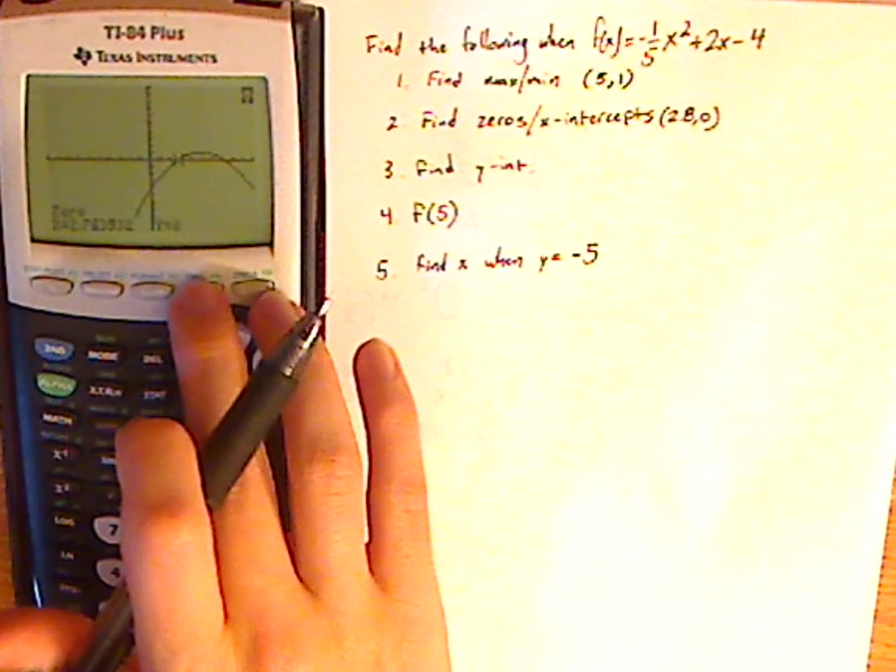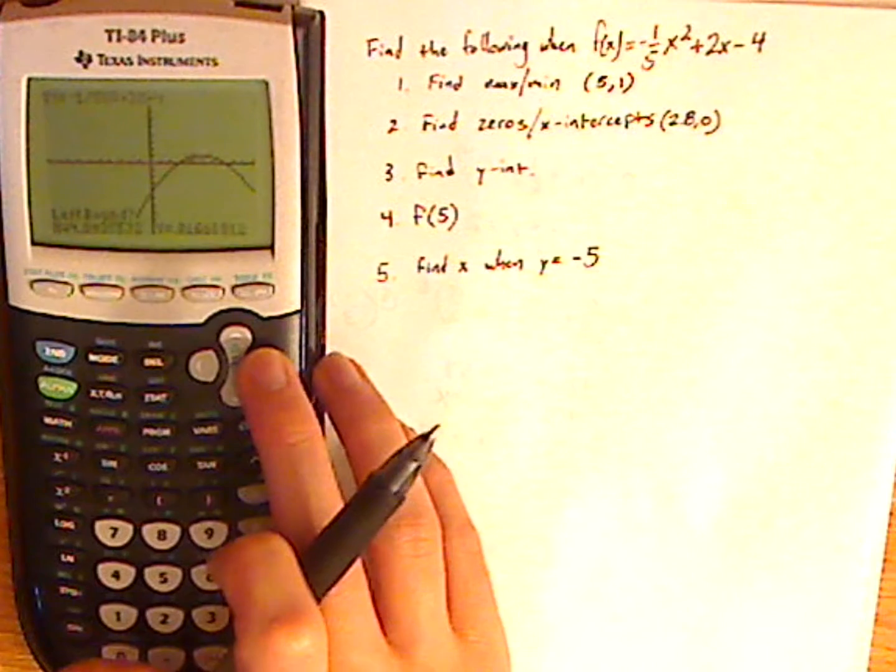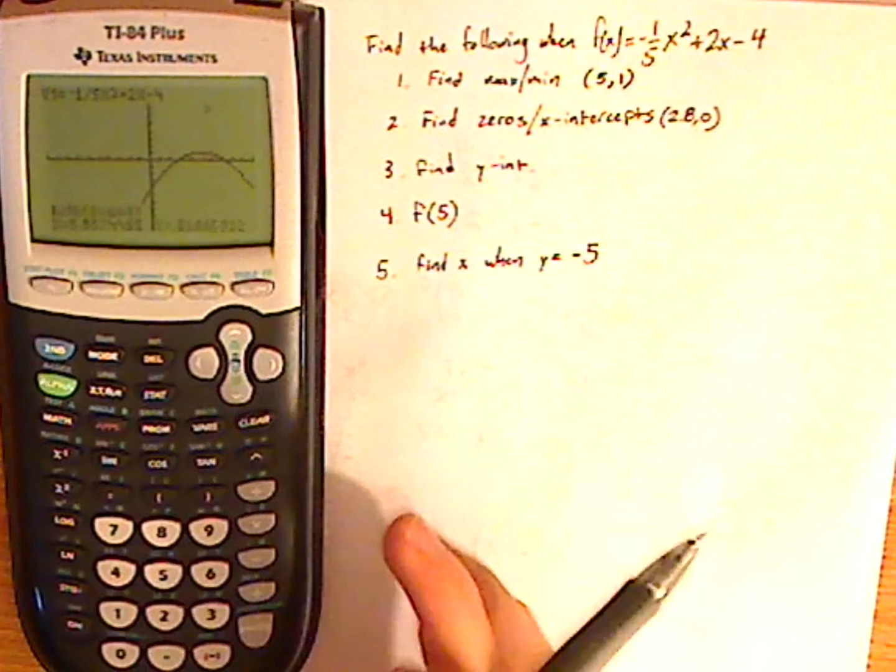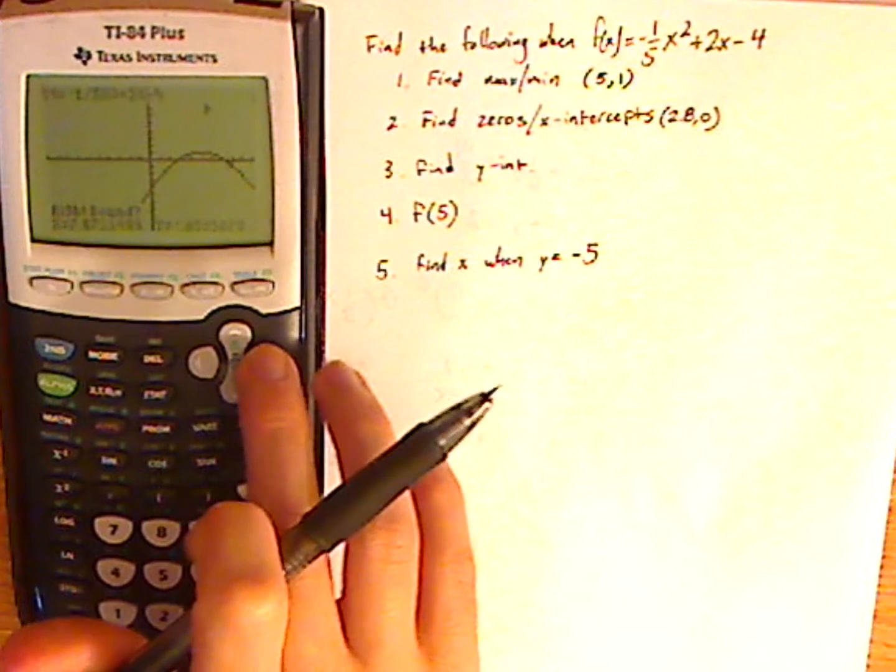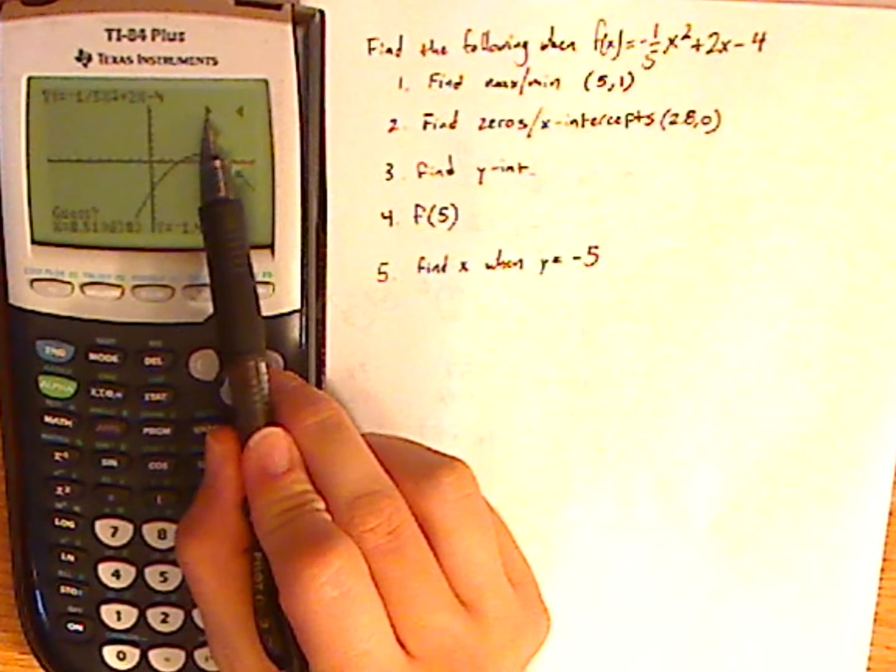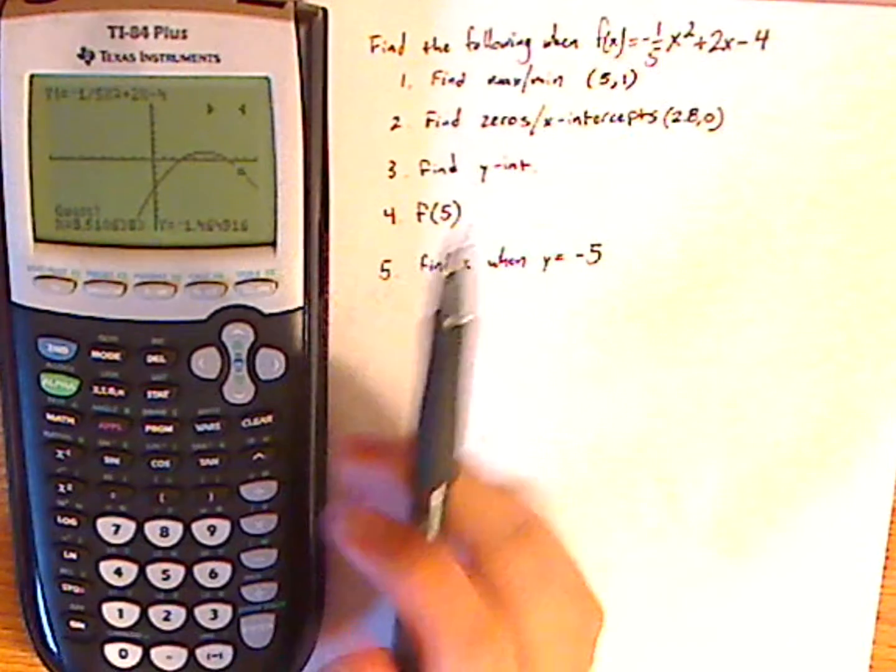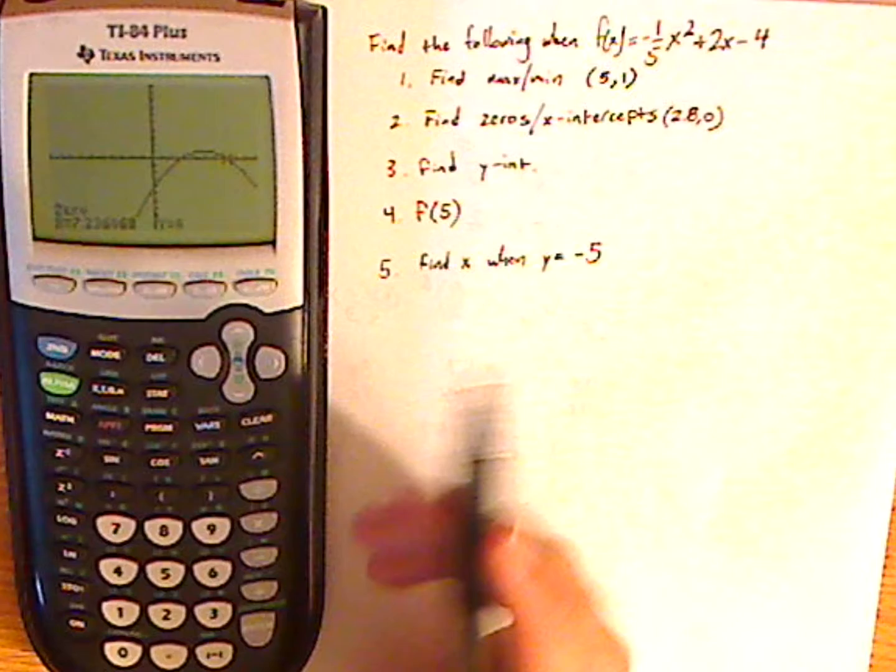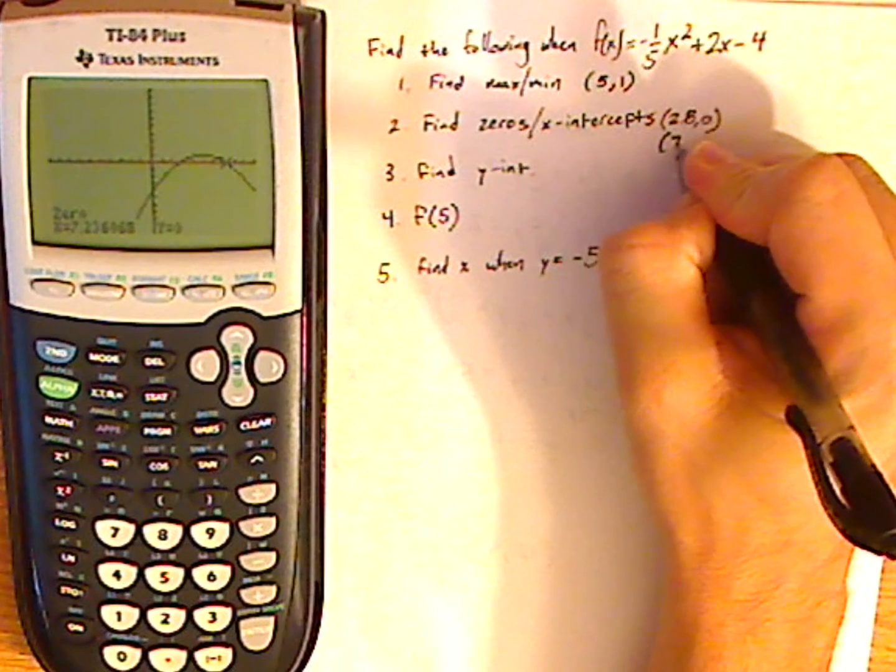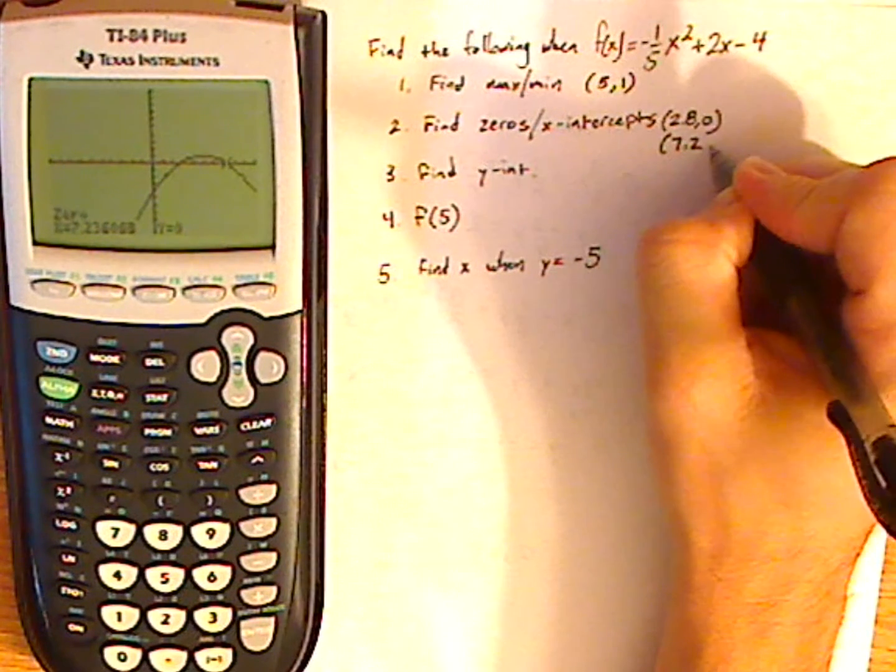Alright, so let me find the other one, clicking zero again. Notice I'm going to go left of the point, click enter, and then I'm going to go right to the point, and click enter. So that means that my zero, or x-intercept, is in between those two x-values. And so I click enter, and it finds it to be, again, I'm going to round to just one decimal place, 7.0.